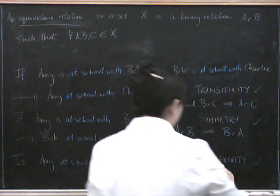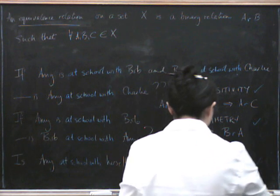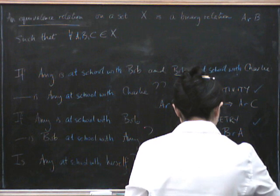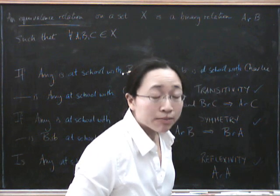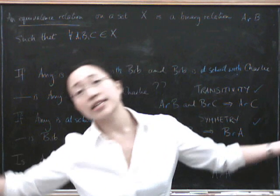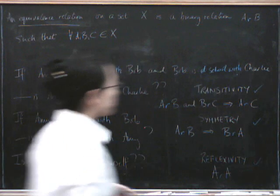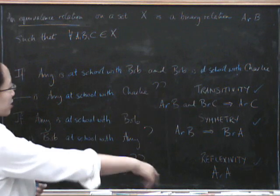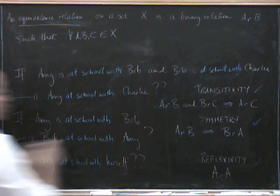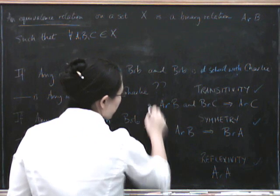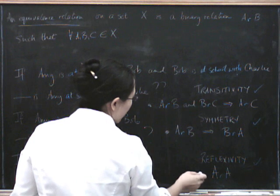And reflexivity says that A is always related to A, and that's for every A in the set X. So B has to be related to B, C has to be related to C, D has to be related to D, and so on. These are the three conditions that correspond to what we just had here. So it's transitivity, symmetry, and reflexivity.